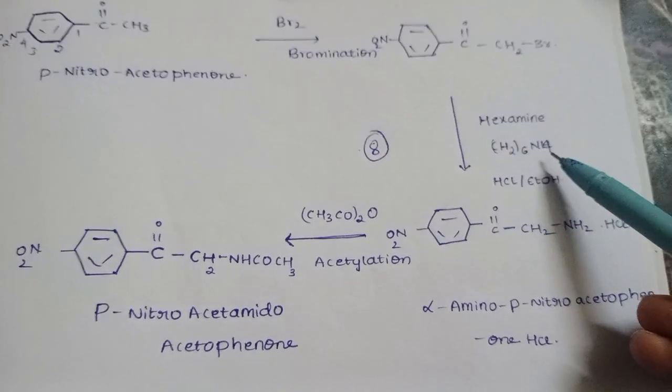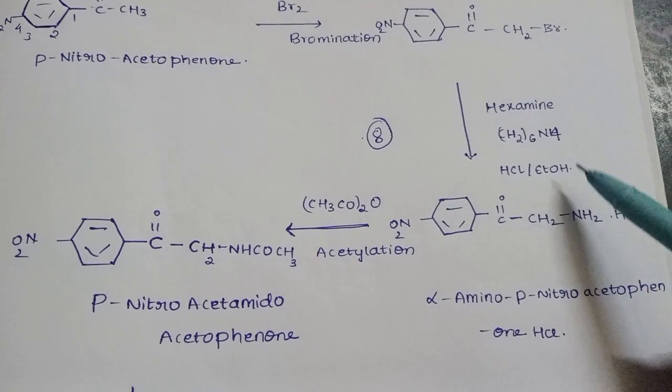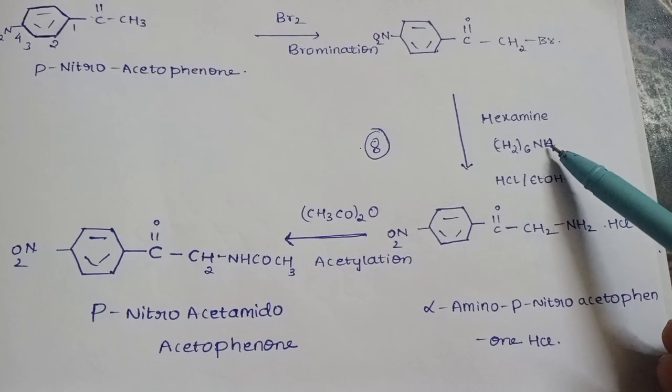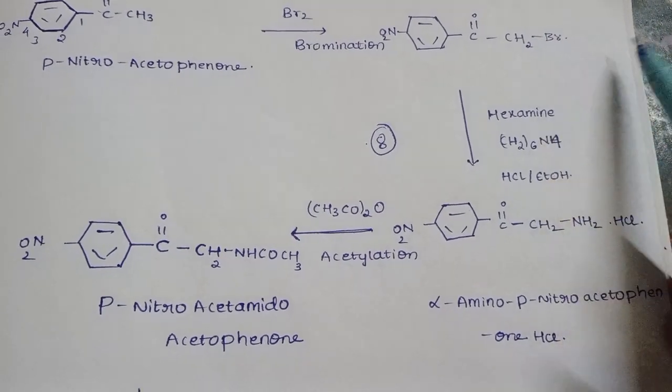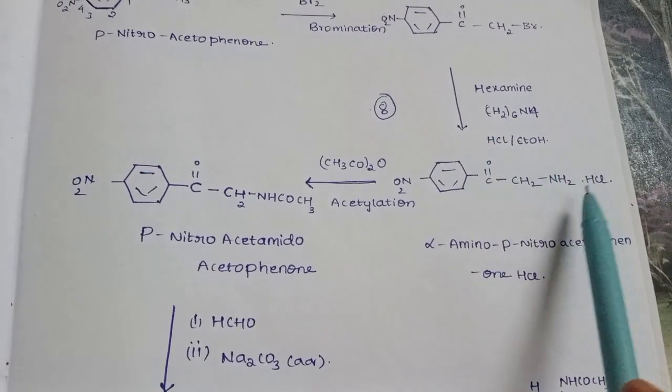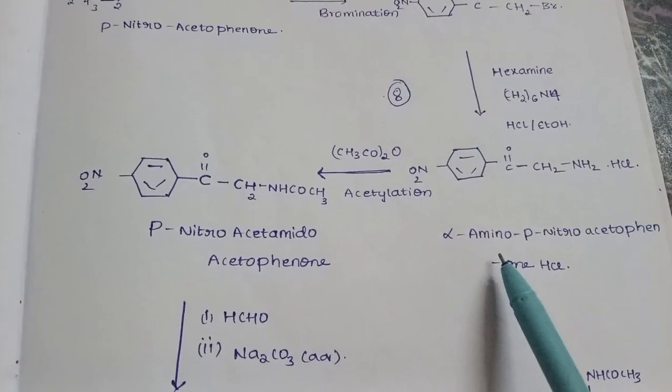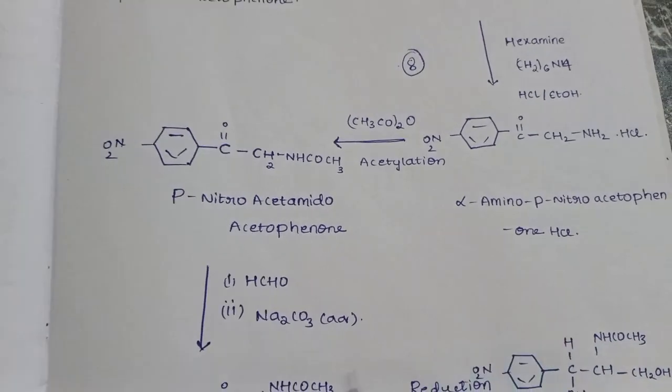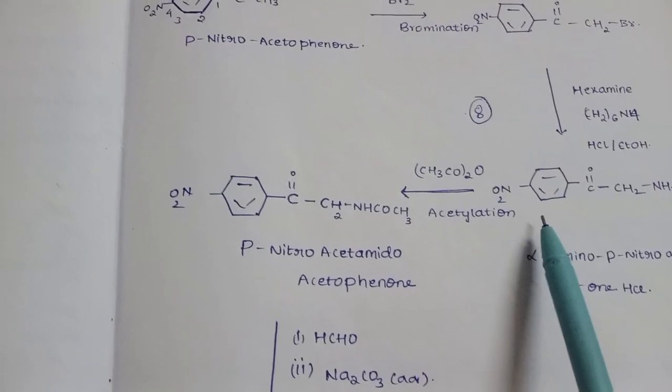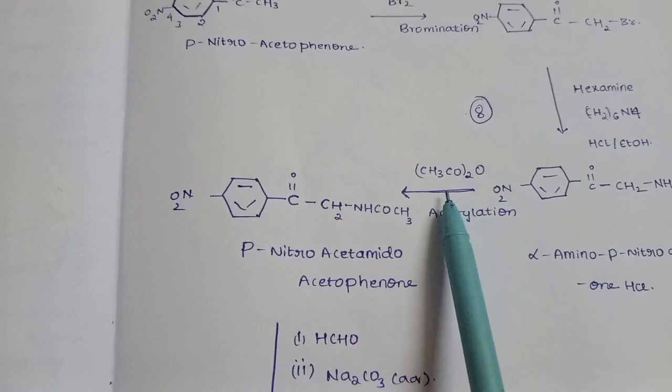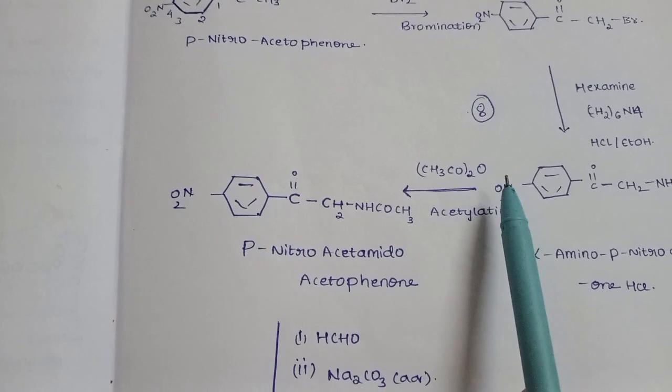The Br and the amine group react, and NH2 with one hydrogen forms HBr. This HCl addition converts it to alpha-amino-p-nitro acetophenone hydrochloride. Next, the amine reacts with hexamine, followed by acetylation.